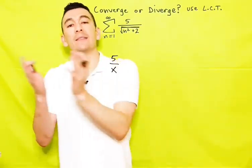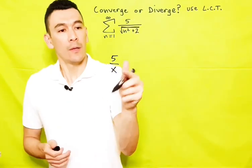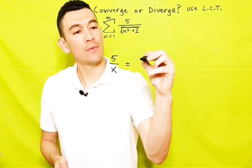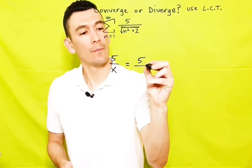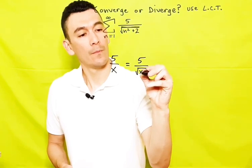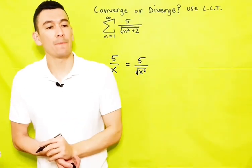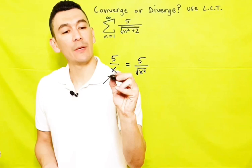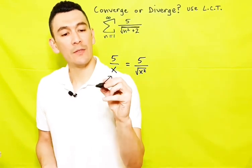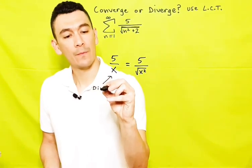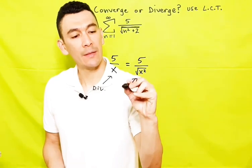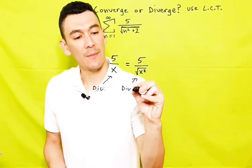This is the same thing, right? So we know that by P series, this series would diverge and so would this one because they're the same thing.